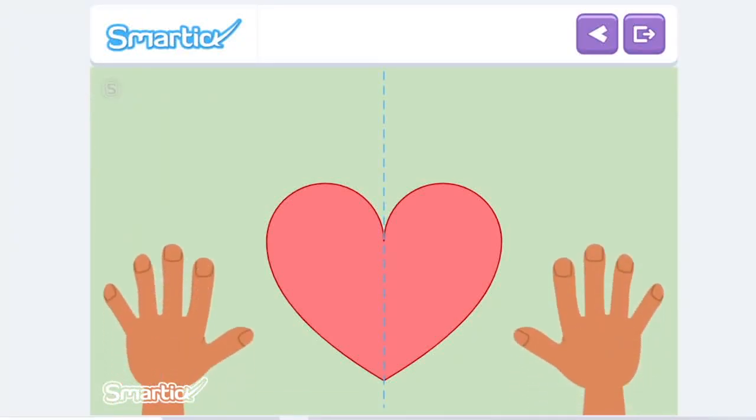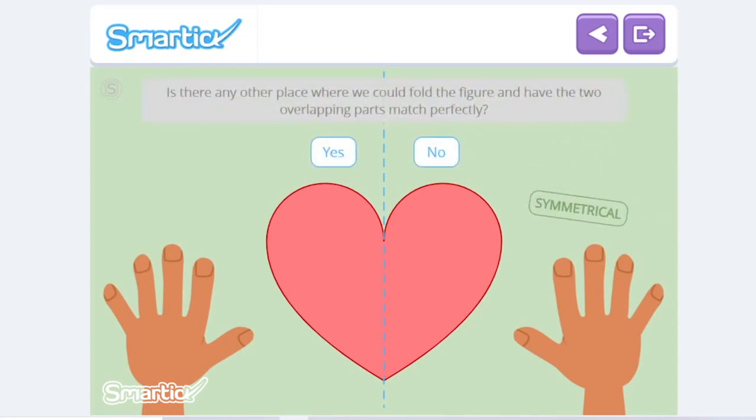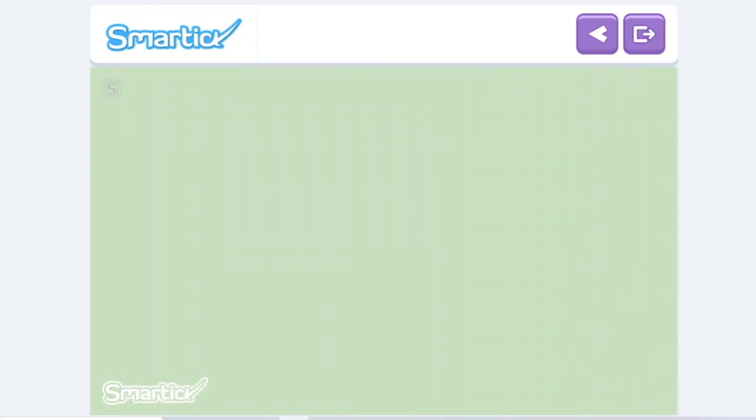So Amy's figure has an axis of symmetry, and therefore it is symmetrical. Is there any other place where we could fold the figure and have the two overlapping parts match perfectly? Of course! There is no other place, so Amy's figure does not have another axis of symmetry.